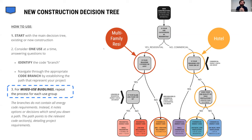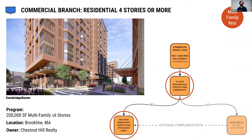Because this is a mixed-use project, even though it's permitted as a single project, the energy code treats each portion of the program separately. The multifamily follows the residential pathway, and the hotel follows the commercial pathway. Because the multifamily is mid-rise, it falls under the commercial energy code still. The hotel falls into the low ventilation commercial pathway. Following the decision tree for the multifamily: they're in a stretch code community with the specialized opt-in adopted, which drives a lot of decisions.